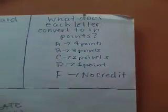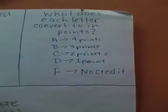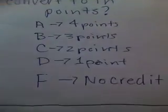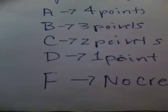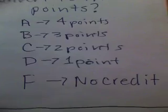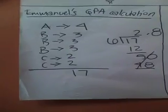Let's see each letter convert to in points. An A equals four points, a B equals three points, a C equals two points, and a D equals one point, and an F equals zero.